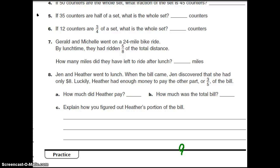So if Jen paid, or if Heather paid 2/5, then Jen must have, I said it wrong, if Heather paid 3/5, then that means Jen must have paid 2/5. So if 2/5 is 8, then 1/5 must be 4.